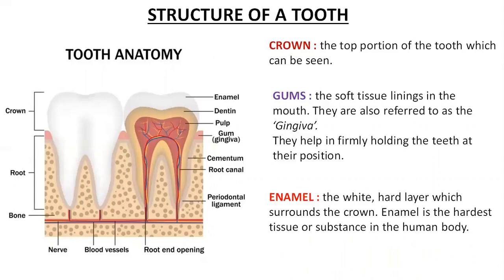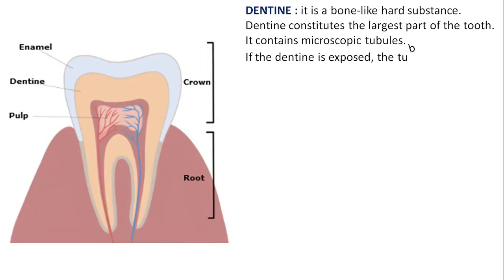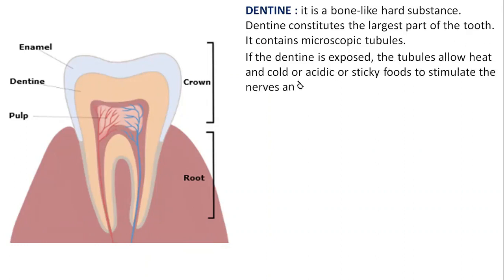Enamel is the hardest tissue or the hardest substance in the human body. Just below the enamel is the dentine, a bone-like hard substance. It constitutes the largest portion of the tooth and consists mainly of crystals of calcium and phosphate. Dentine helps to support the structure of the tooth and contains microscopic tubules — small hollow tubes or canals. If the dentine loses its protective covering enamel, these tubules allow heat, cold, or any acidic or sticky foods to stimulate the nerves and cells inside the tooth, hence causing sensitivity.